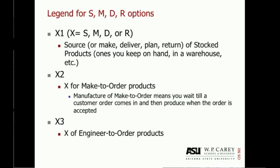X3 — whether that's source, make, deliver, or return — would be for engineer-to-order products. As you can tell, the processes for engineer-to-order environments would be very different from producing stocked goods. In the case of stocked goods, you know what you're producing, you produce it repetitively, and you can more easily predict demand. With engineer-to-order products, you're working with customers to develop a whole new product, and then based on their requirements, going out and sourcing something you may have never done before. So it's important to keep in mind what type of products are moving through the supply chain.